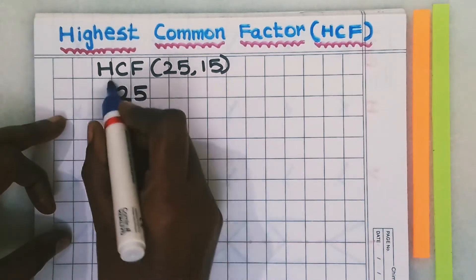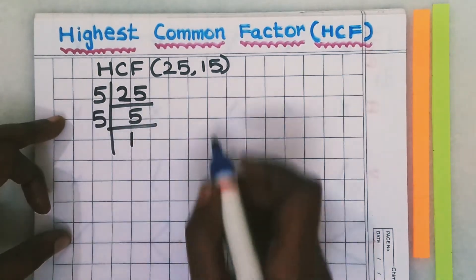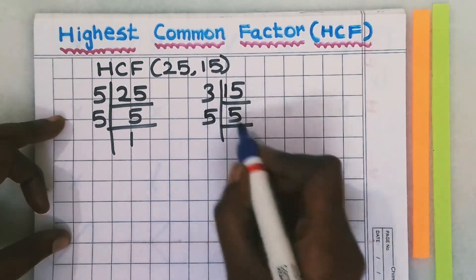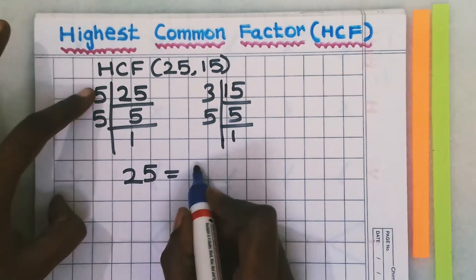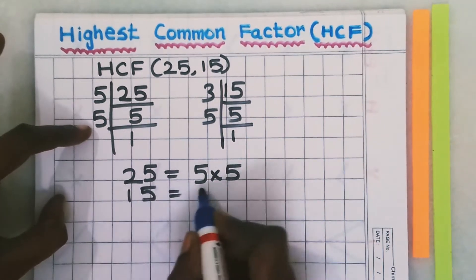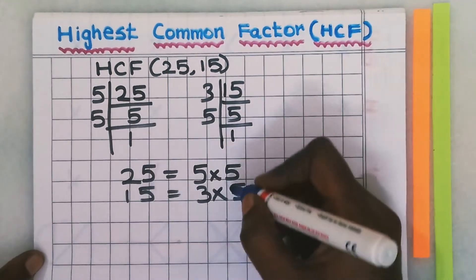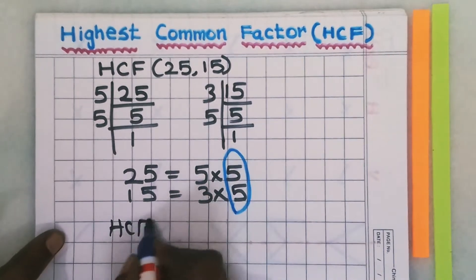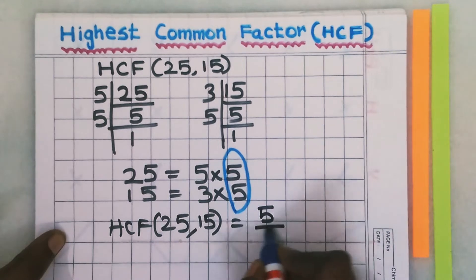For 25, using the prime factorization method: 5 times 5 is 25, then 5 times 1 is 5. For 15: 3 times 5 is 15, then 5 times 1 is 5. So 25 can be written as 5 into 5, and 15 can be written as 3 into 5. The common factor in both numbers is 5, so the HCF of 25 and 15 is 5.